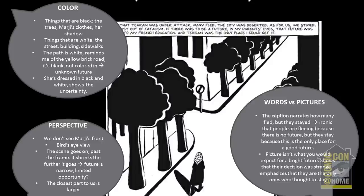The caption talks about fleeing a country because there's no future there, and then Marji's family choosing to stay because they see that's the only place where they have a future. Looking at the picture shows it doesn't clearly articulate that there's a future there for Marji in her perspective. If everyone is looking at just one element of that panel and then brings those interpretations together to make meaning and draw conclusions, I found that the interpretations students come up with collaboratively far outweigh what they could have come up with on their own.